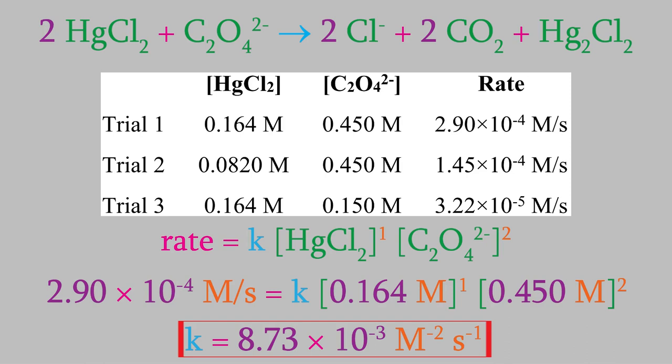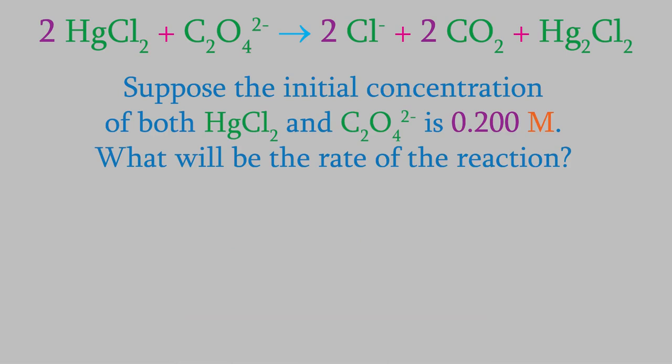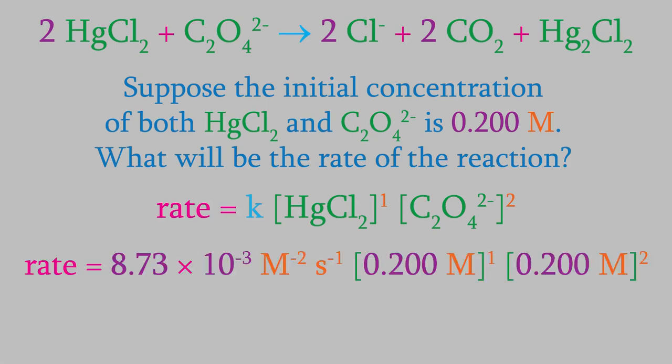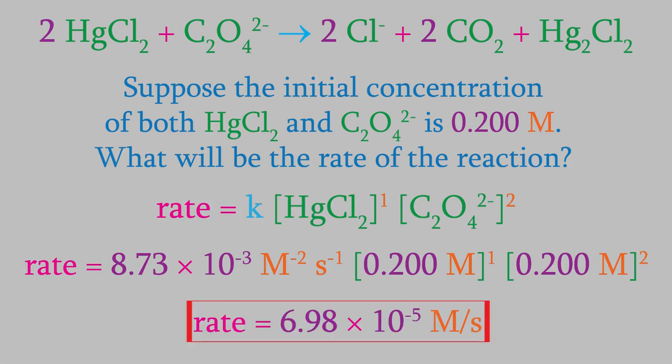Now that we know k, we can determine the rate of this reaction for any starting concentrations. For example, suppose we started with a concentration of 0.200 molar for both of the reactants. What would be the reaction rate? Because of all the work we just did, it'll be easy to calculate this. We use 0.200 molar for the concentrations and the value of k we just determined. That will give us a rate of 6.98 times 10 to the minus 5 molars per second.